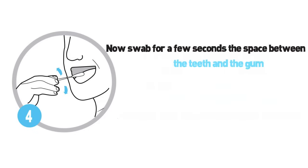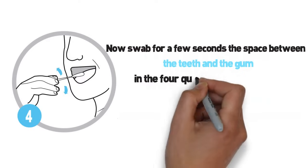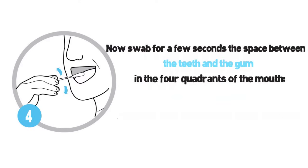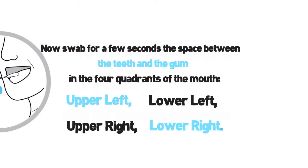Now swab for a few seconds the space between the teeth and gum in the four quadrants of the mouth: upper left, lower left, upper right, lower right. Step 5.